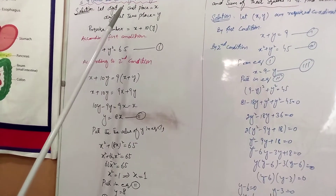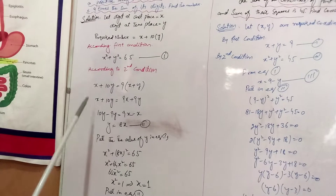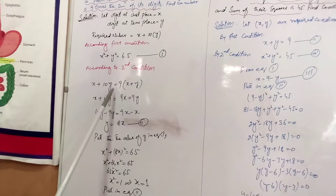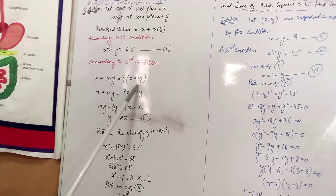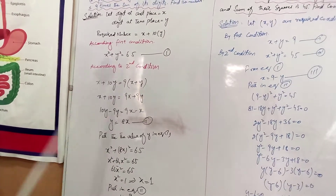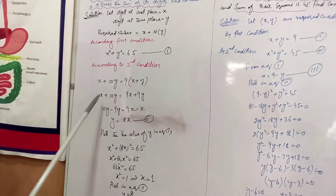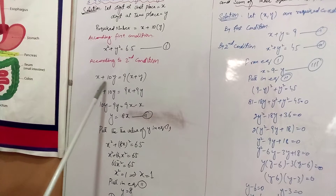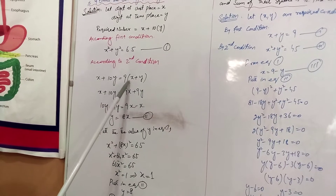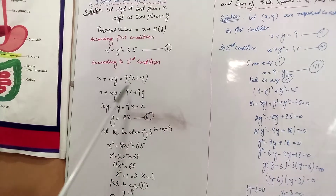According to the second condition, the number is 9 times the sum of its digits. So we get x plus 10y is equal to 9 into x plus y.